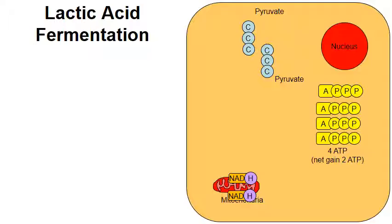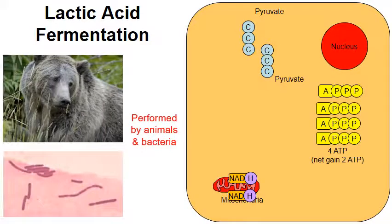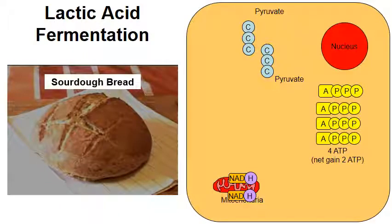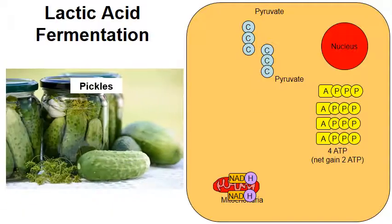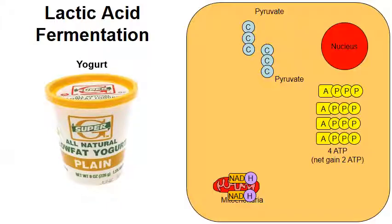There are actually two kinds of fermentation, and we're going to start with lactic acid fermentation. This is the fermentation performed by animals such as bears and humans, as well as by microscopic bacteria. We actually use the lactic acid fermentation process of bacteria to make many food products — for instance, it's what gives sourdough bread its distinct flavor, it's used for fermenting cucumbers to make pickles, and in the production of yogurt it gives yogurt its sour taste because the bacteria produce lactic acid.